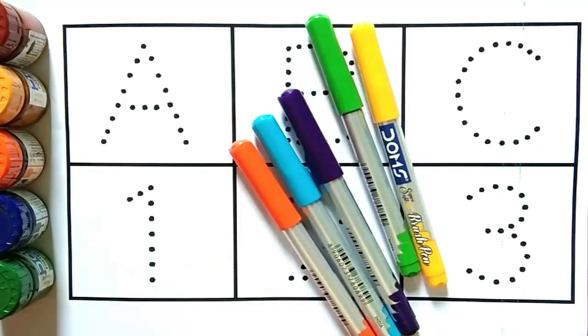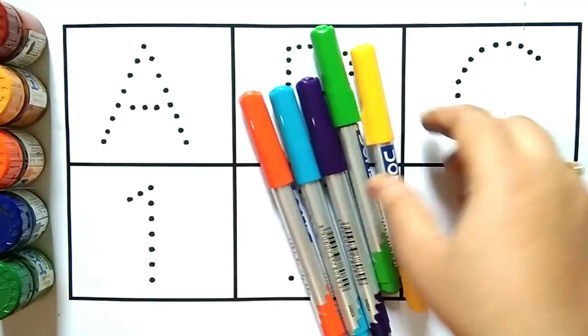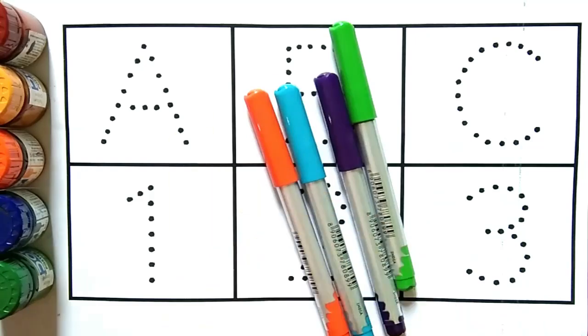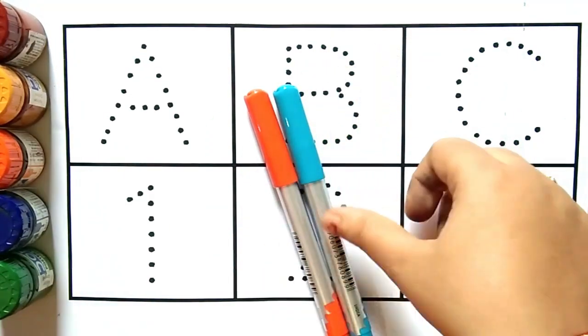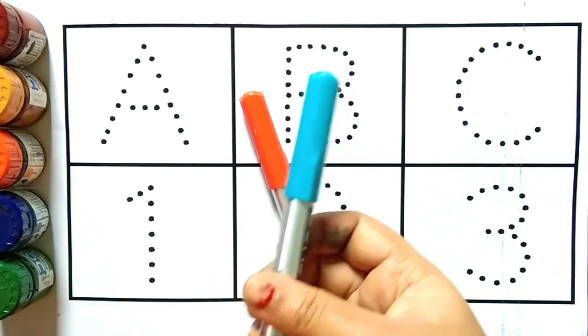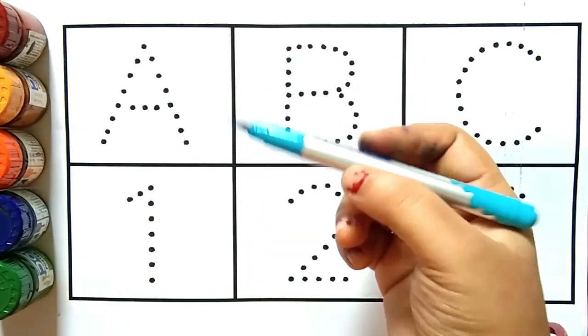Hello kids. Swagat hai aap sabhi ko mere channel mein. Aaj ke is video mein hum sikhne aur padhne wale hai A, B, C, D, Alphabets. One, two, three, numbers counting. Toh chaliye video ko shuru karte hain. Pehle hum jaan lete hain. Yeh hai yellow color, yeh hai light green color, yeh hai purple color, yeh hai sky blue color and yeh hai orange color, sky blue color.